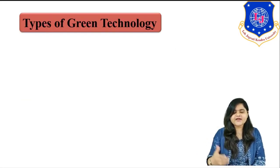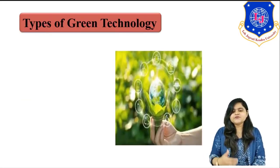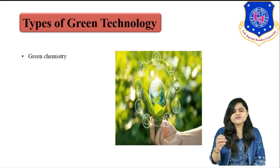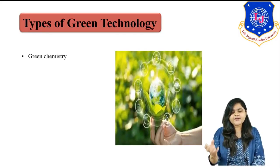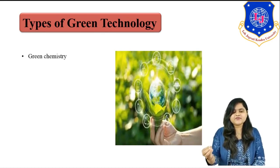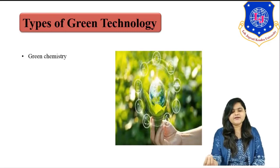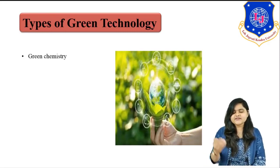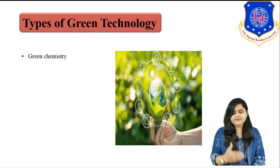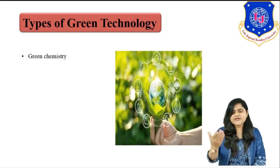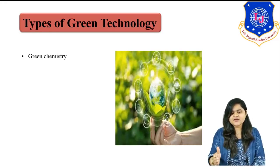We have different types of green technology. The first type is green chemistry, also known as sustainable chemistry, which says to develop a chemical product or process in such a way that it should be non-hazardous.